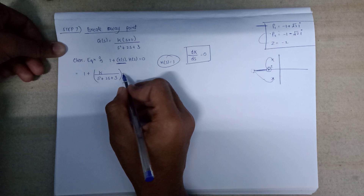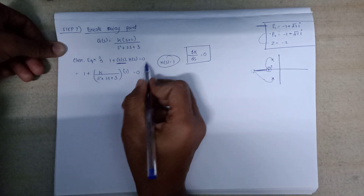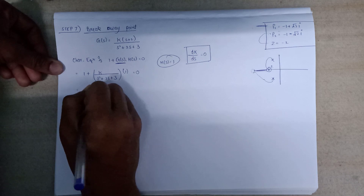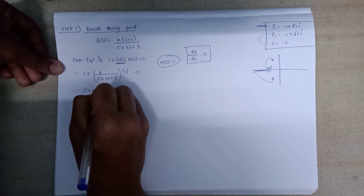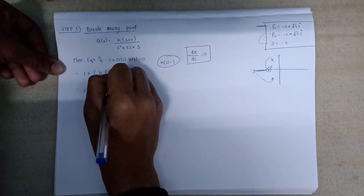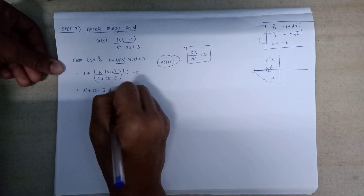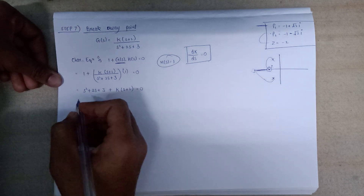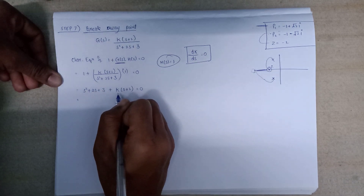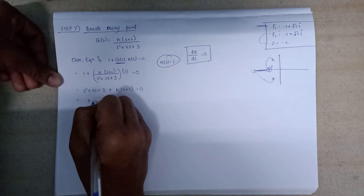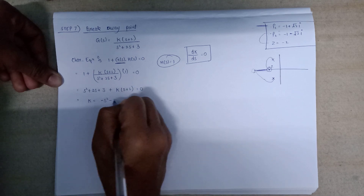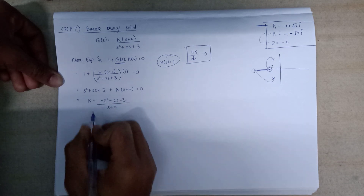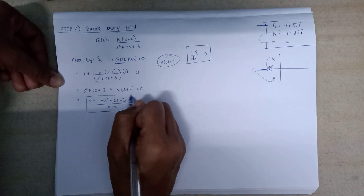Since it is a unity feedback system, H(s) = 1. Setting the characteristic equation equal to zero and solving, we get s² + 2s + 3 + K(s + 2) = 0. Rearranging for K, we get K = -(s² + 2s + 3) / (s + 2).